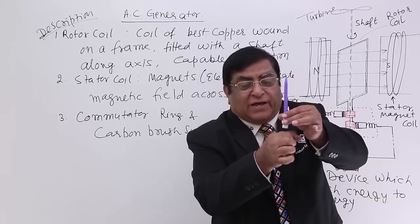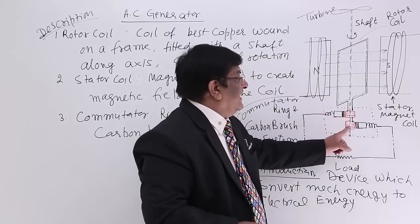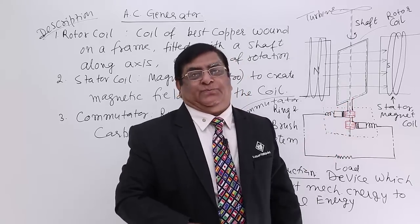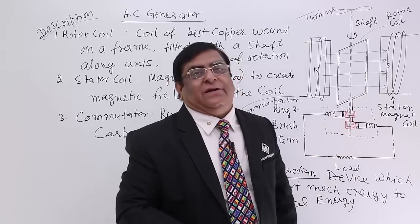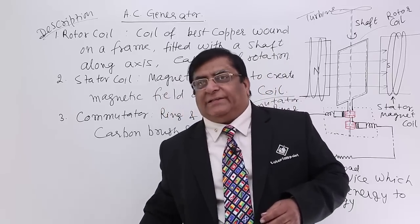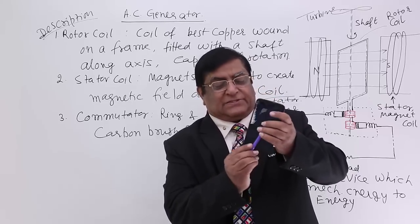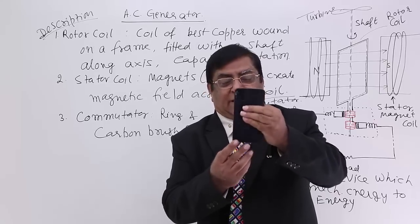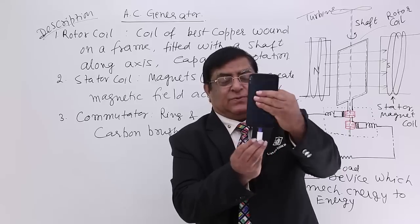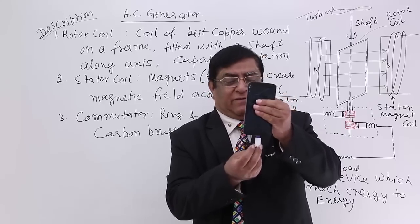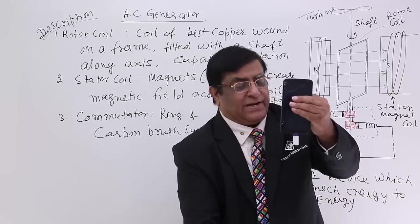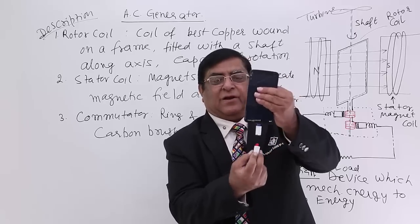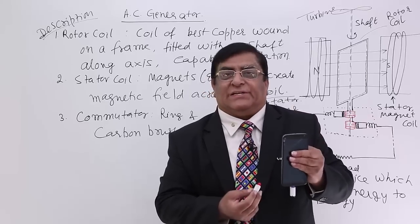There are two rings on the shaft — one here and one here. One end of the coil is connected to ring 1 and the second end is connected to ring 2, so both terminals are present on the rings. Now when we rotate the coil and the shaft rotates, the rings also rotate but nothing breaks. Ring 1 holds one terminal of the coil and ring 2 holds the second terminal. An EMF is created from one end to the other — one becomes positive and the other negative.